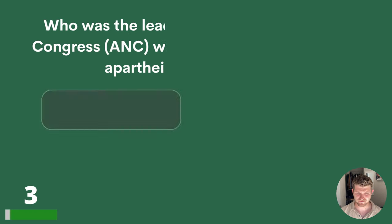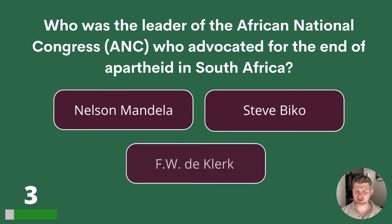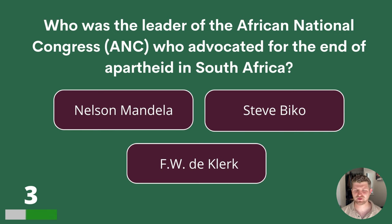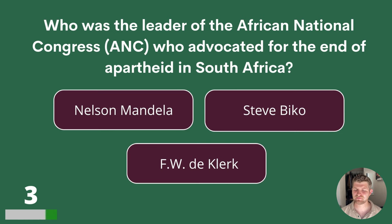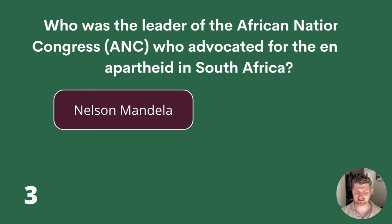Question 3. Who was the leader of the African National Congress who advocated for the end of apartheid in South Africa? Nelson Mandela, Steve Biko or F.W. de Klerk? The answer is Nelson Mandela.